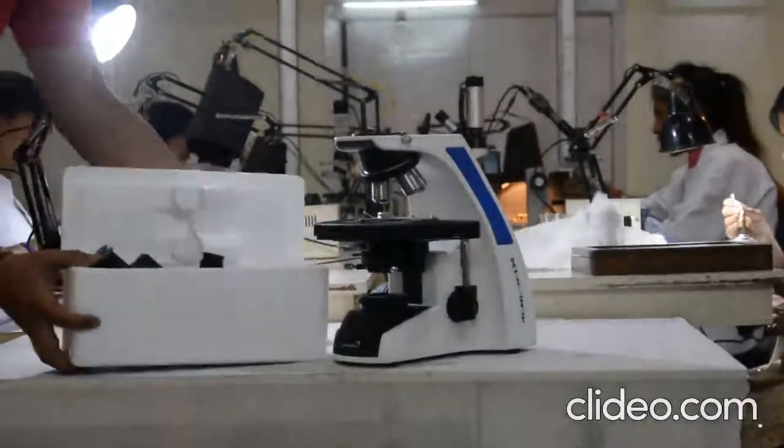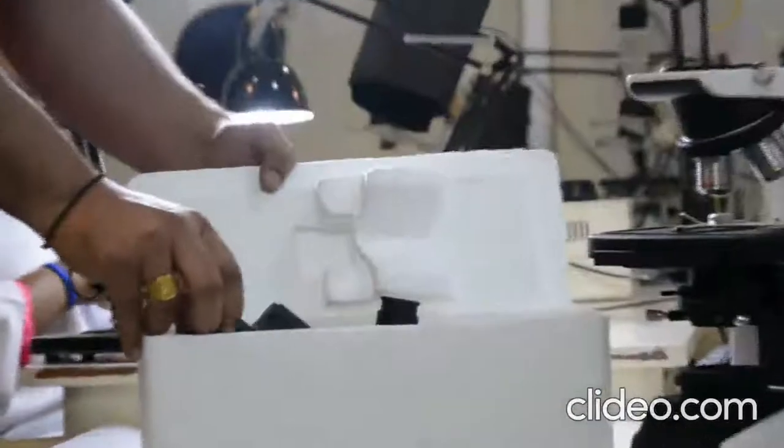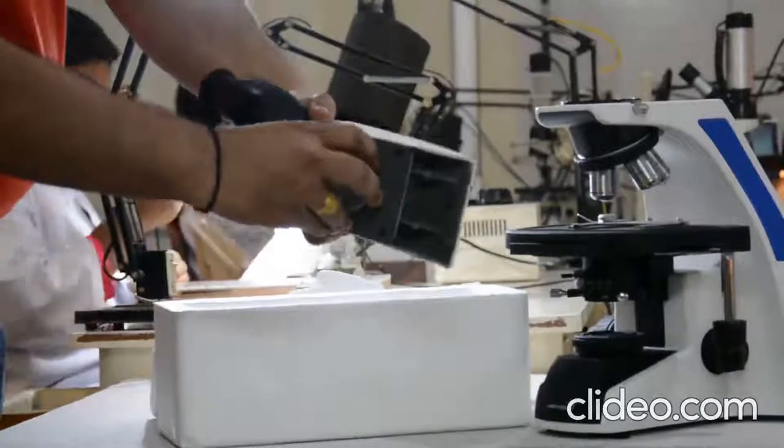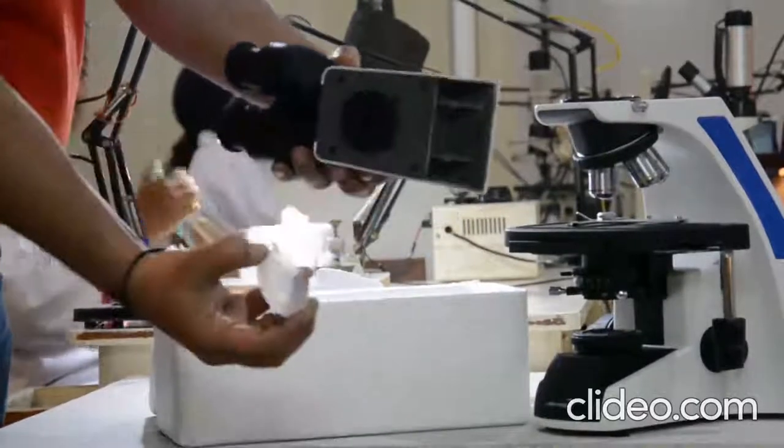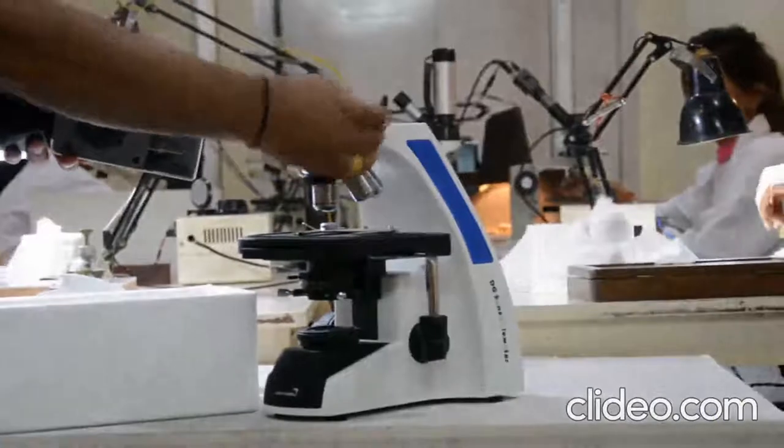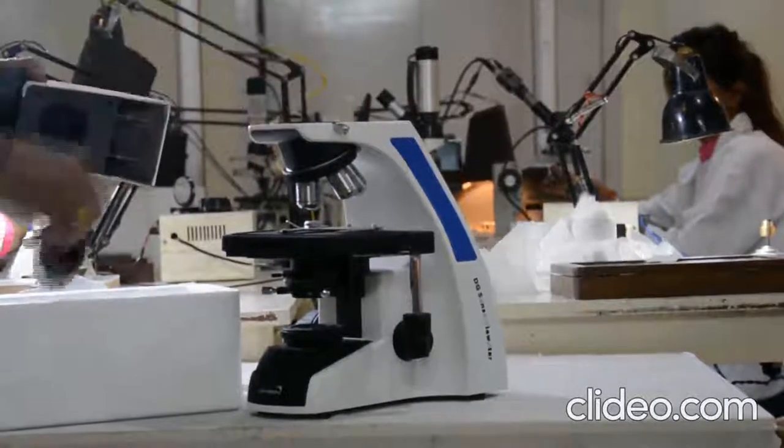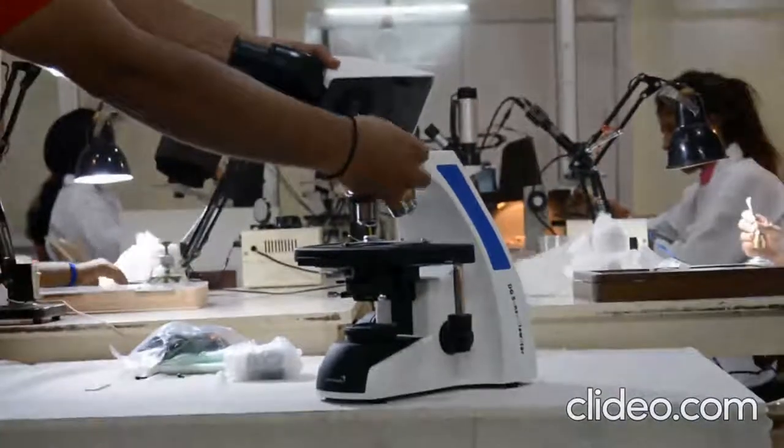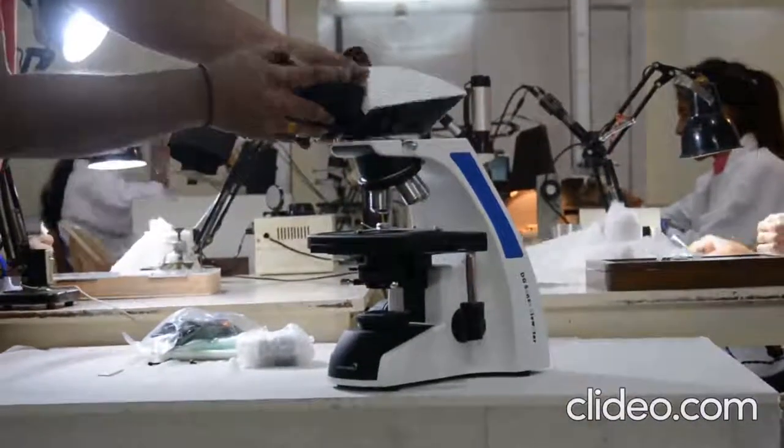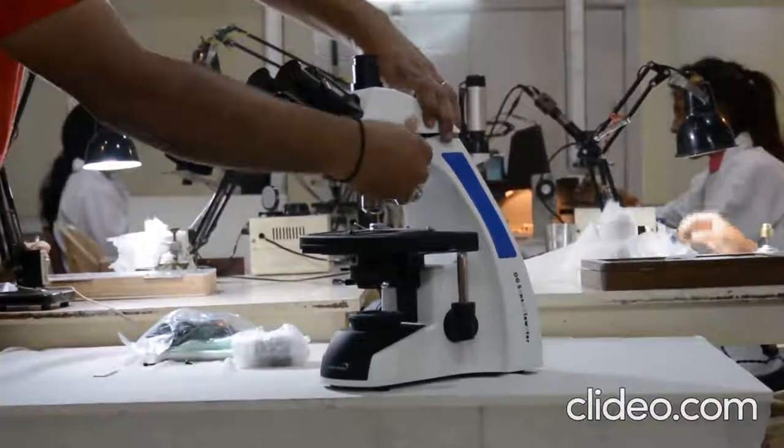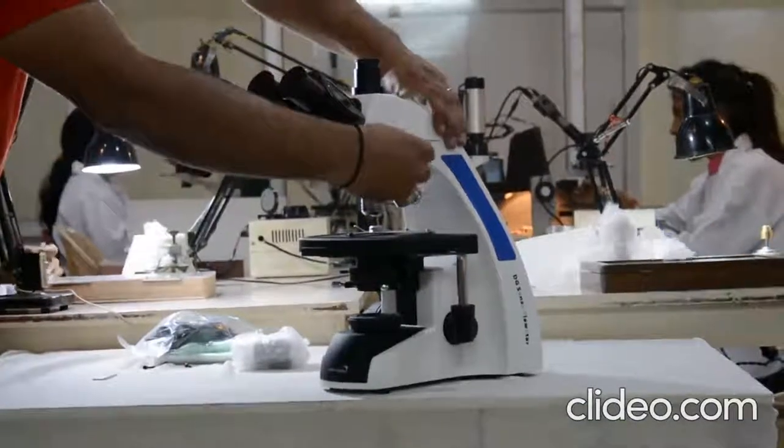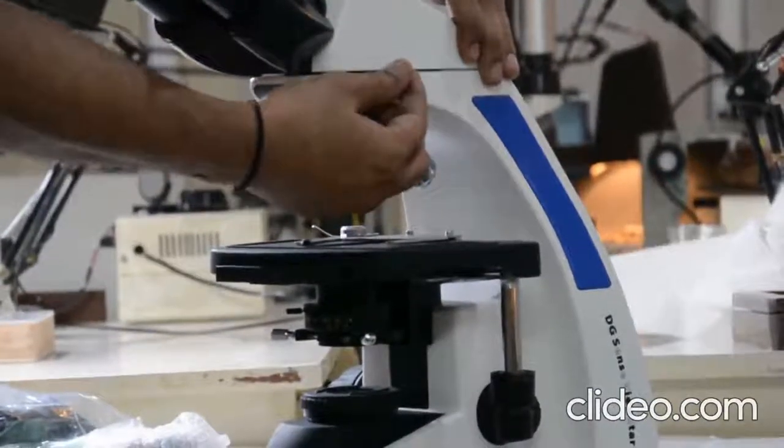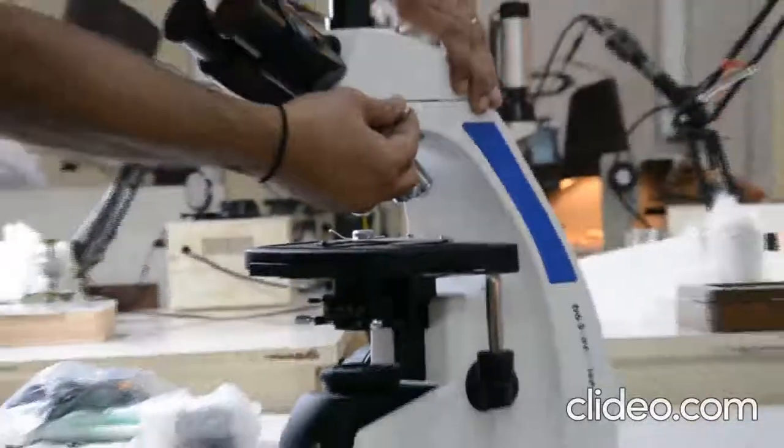Now we will open the other attachments. This is the trinocular head of DesiSense View Star. You have to take out the cap cover. Take out the cap cover from the top. You have to put the head in the same section and tighten the screw. And check if the head has been attached properly.